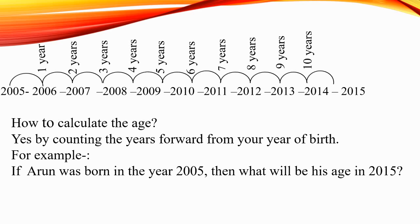From 2005 to 2006 is 1 year, 2006 to 2007 is 2 years, 2007 to 2008 is 3 years, 2008 to 2009 is 4 years, 2009 to 2010 is 5 years, 2010 to 2011 is 6 years, 2011 to 2012 is 7 years, 2012 to 2013 is 8 years, 2013 to 2014 is 9 years, 2014 to 2015 is 10 years. So what is the age of Arun here? Yes, he is 10 years old.